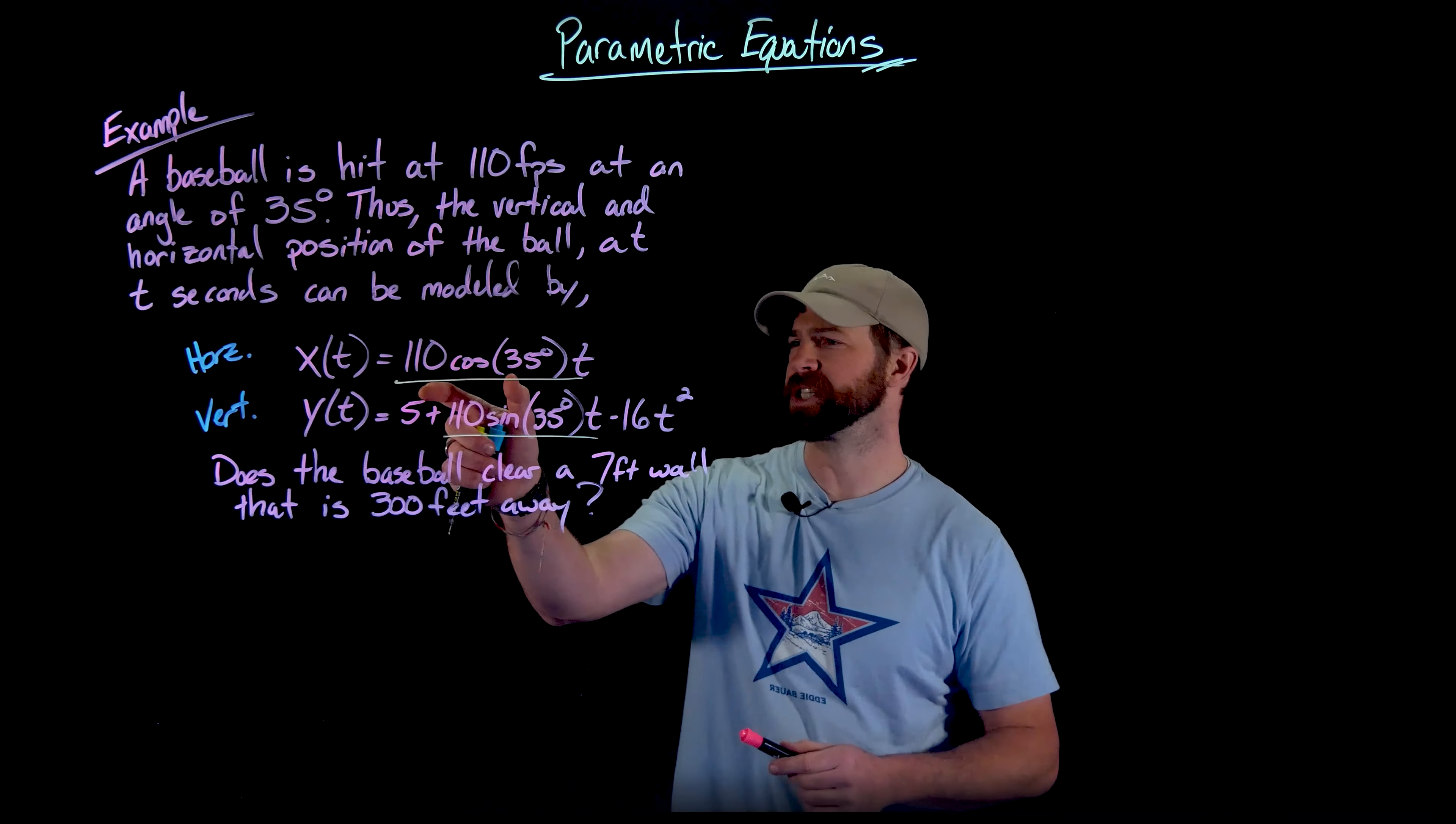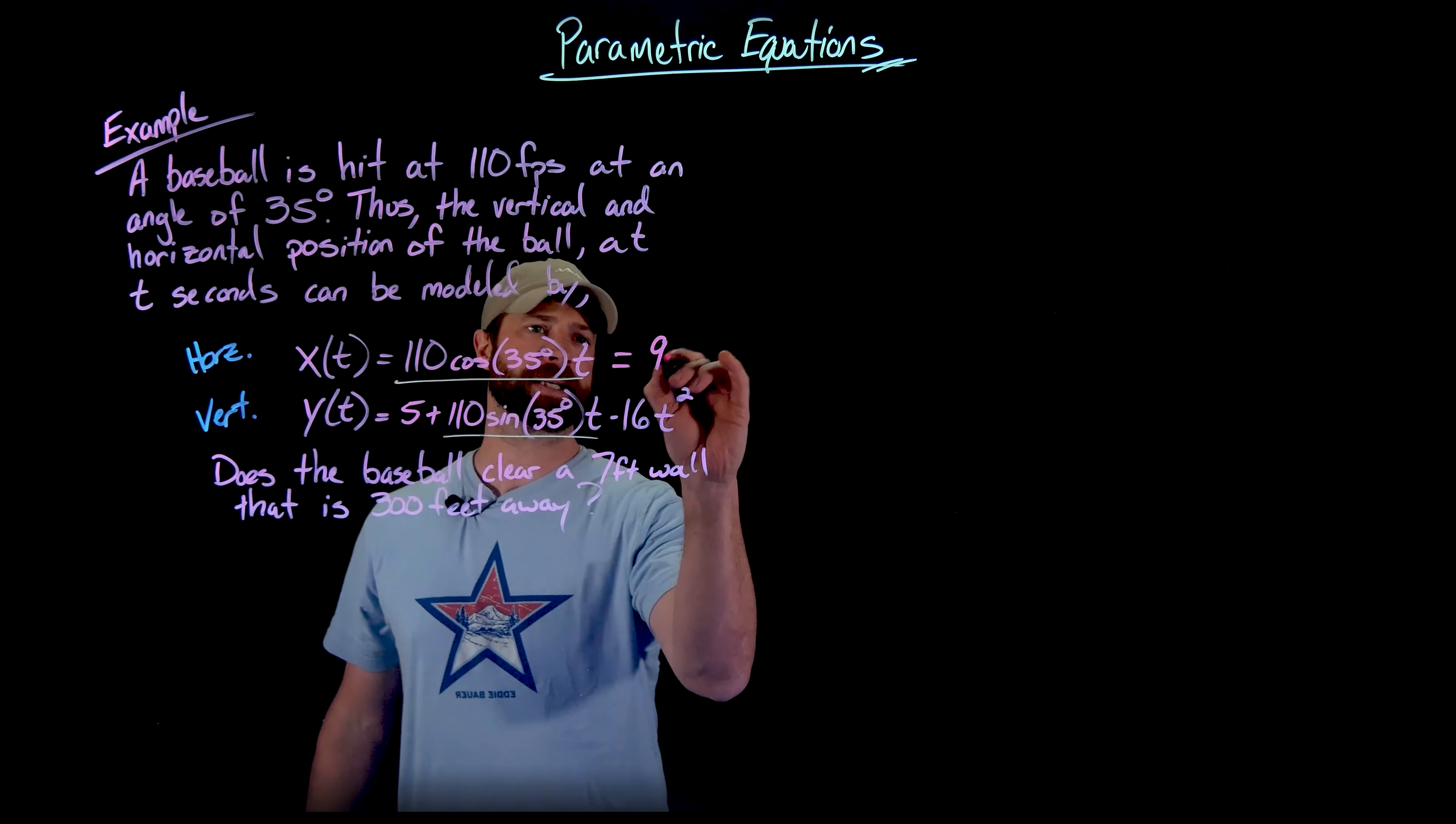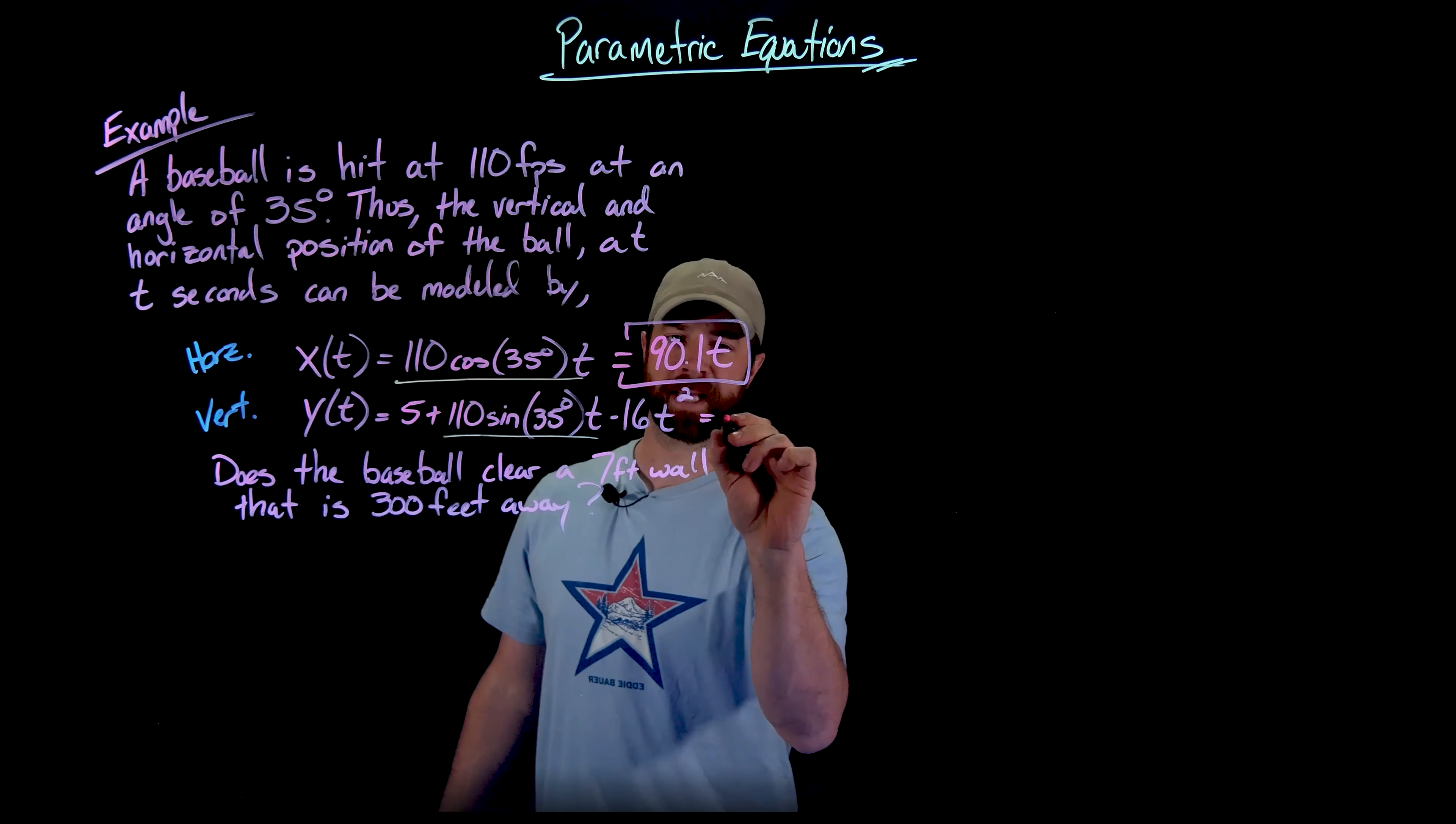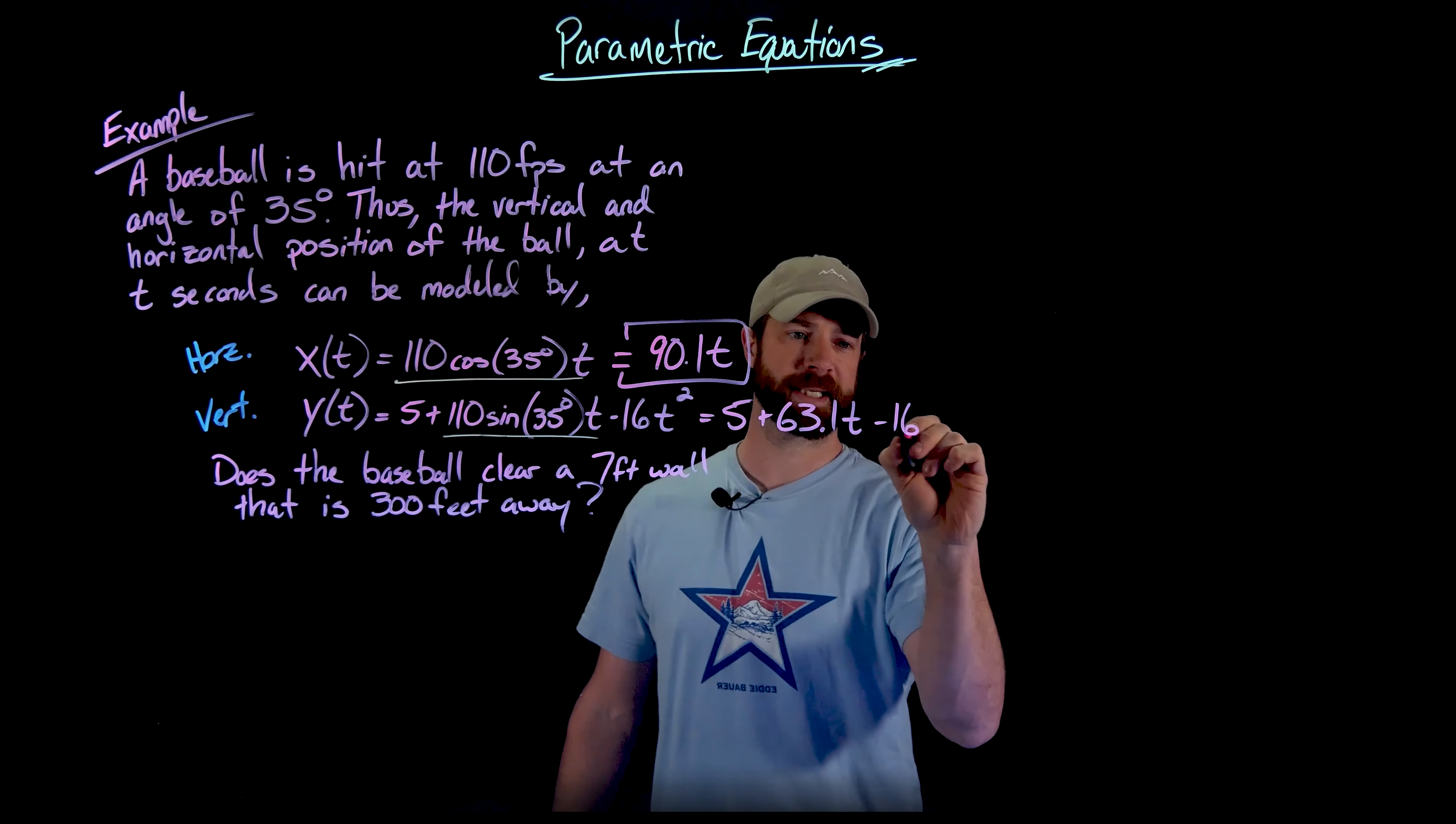And that's just to give you an idea of where these equations come from, but really not necessary in this situation. Let's clean these up a little bit. This is just a constant. Obviously this cosine part isn't a variable part. So let's just multiply these together. When I've done that, I got that this is 90.1T. So that is the horizontal component or horizontal parametric equation. For Y right here, when I clean this up, what I get is five. This right here becomes 63.1T and then still minus this 16T squared.